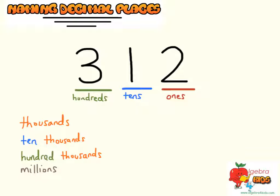You can also add a decimal to the end of the number, and we call this the AND. So we say the decimal point as AND — that's how we say decimal.